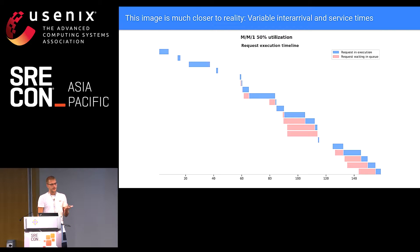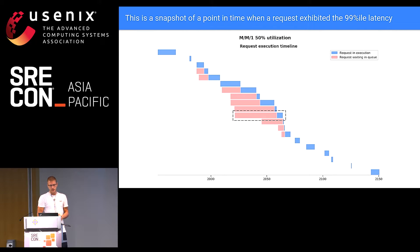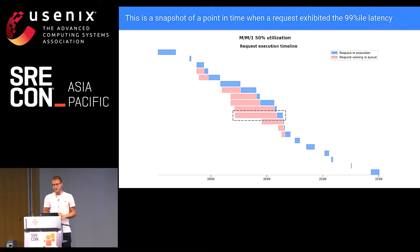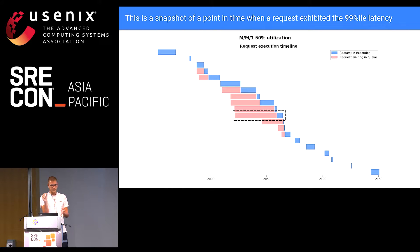Now if we talk about the tail latency of such a scenario — moving forward in time to maybe second number two in the simulated observation — the request in the middle actually exhibits the 99th percentile latency. What we can see is that it's mostly waiting. It could be super quick to serve; on average requests take five milliseconds, but this one is mostly waiting. That's what the user perceives — it's mostly unproductive time.